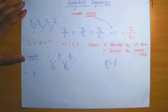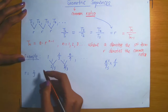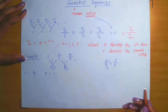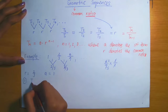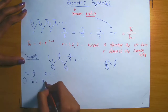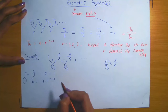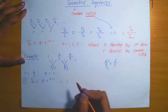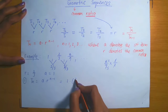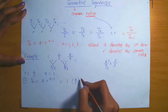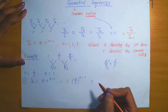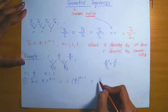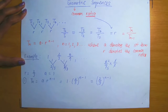Let's determine the general formula for the nth term. We have that the first term a is equal to 1. Therefore, tn, which equals a times r raised to the power n minus 1, now equals 1 multiplied by 2/3 raised to the power n minus 1. We can rewrite this simply as (2/3) raised to the power n minus 1.